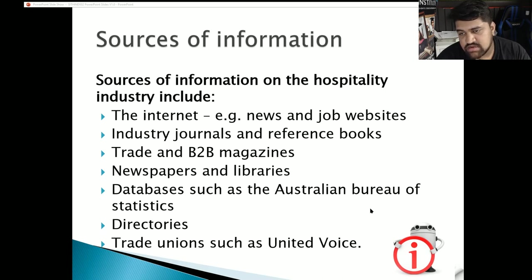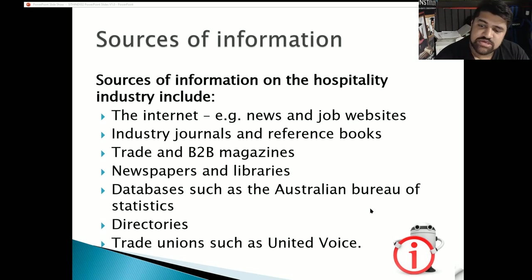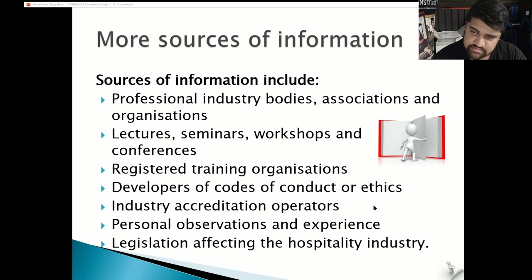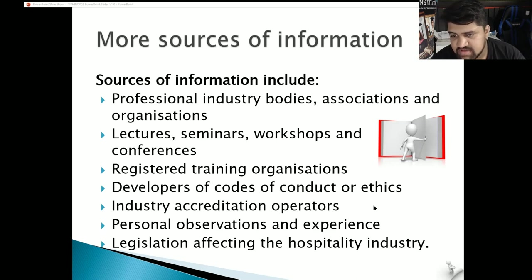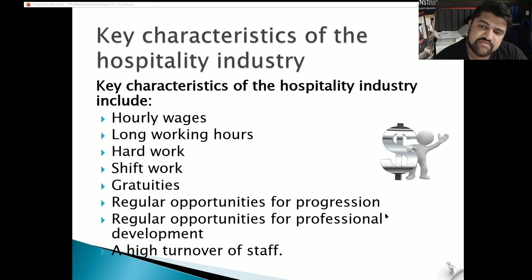Sources of information on the hospitality industry may include the internet, news websites, job websites, industry journals, reference books, trade and business-to-business magazines, newspapers, libraries, databases such as the Australian Bureau of Statistics, directories, and trade unions such as United Voice. Sources may also include professional industry bodies, associations and organizations, lectures, seminars, workshops and conferences, registered training organizations, developers of codes of conduct or ethics, and industry accreditation operators.